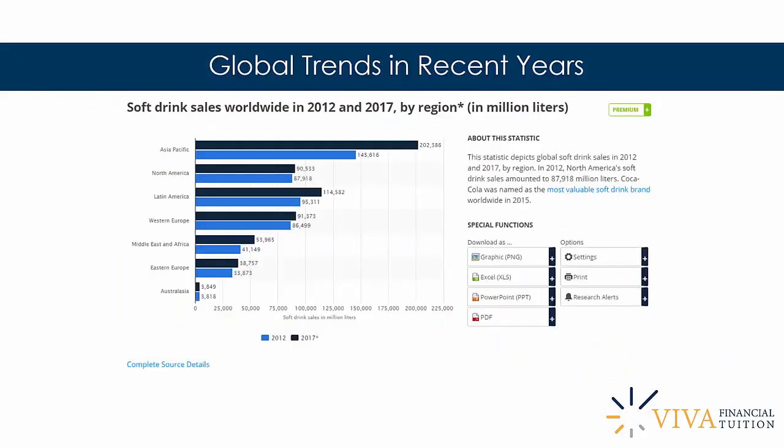Looking at global soft drinks trends from 2012 to 2017 in terms of sales figures, not surprisingly the major growth area has been Asia Pacific, with the huge amount of growth seen in China from around 2010 onwards spurring on soft drink sales in that market. North America and Europe show much more modest growth, as they are mature markets. Latin America has seen healthy growth figures as well, but Asia Pacific is where most of the action is occurring in both absolute numbers and growth terms.